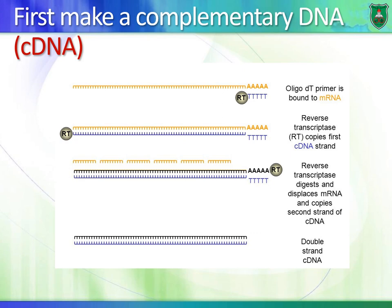It all starts by making complementary DNA, or cDNA, from a messenger RNA. The messenger RNA is modified by adding a poly-A tail. So what we can do is convert it to DNA — complementary DNA — using a primer, an oligo-deoxy-T. This oligo-deoxy-T would bind to the poly-A tail, and then the reverse transcriptase would make the first strand of DNA using the messenger RNA as a template.